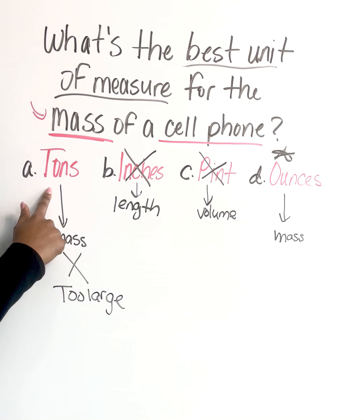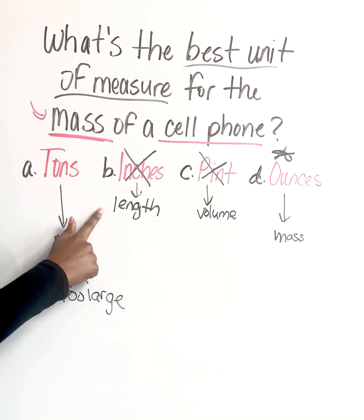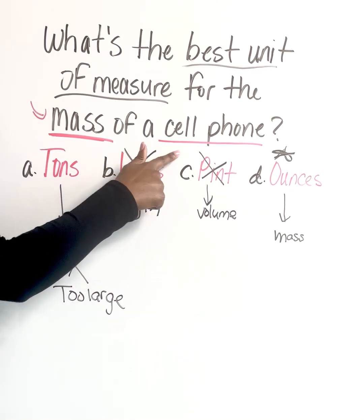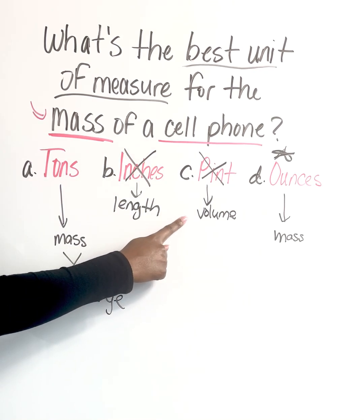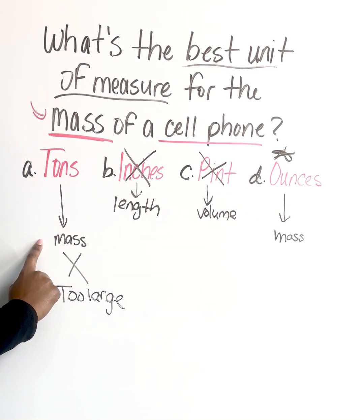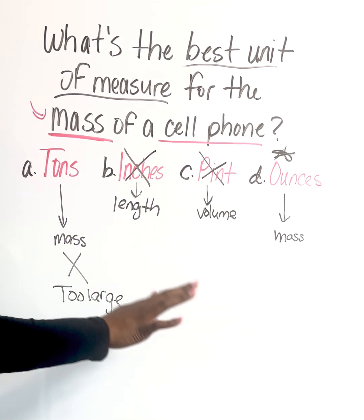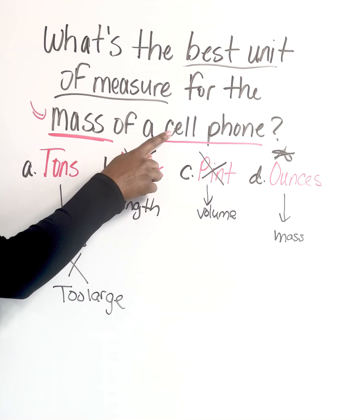Based on this, let's look at our answer choices and eliminate what doesn't fit. We decided that inches didn't fit because that measured length. Pints didn't fit because that measured volume. So that left me with tons and ounces because both of these units measure mass. Now, based on both of these units, what was the most appropriate? What made the most sense in reference to a cell phone?